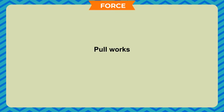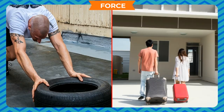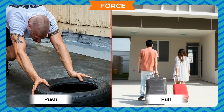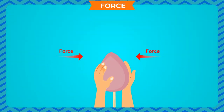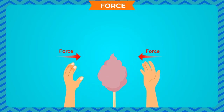Animal pulling a cart, and all objects being attracted towards the Earth. Pull works in examples 2, 4, and 5, while push works in examples 1 and 3. Force is that pull or push which can change the state of motion or rest of an object. It can also change the shape, size, or dimensions of an object.